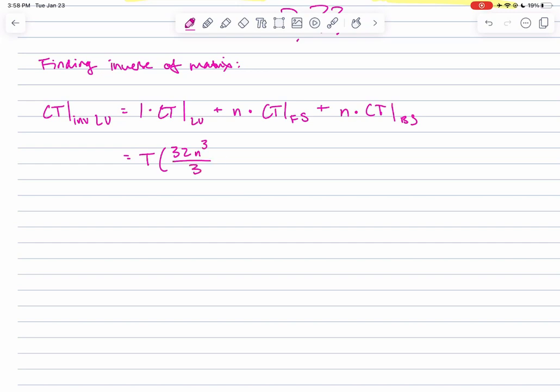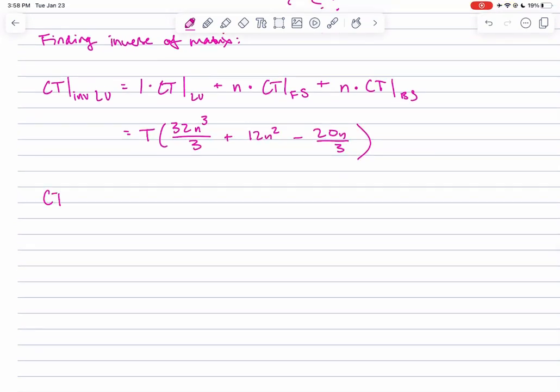For Gaussian elimination, the forward elimination and backward substitution both need to be done n times. This is the total computational cost I got for Gaussian.